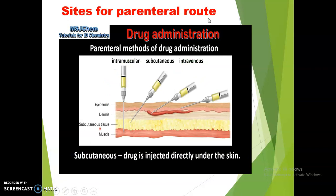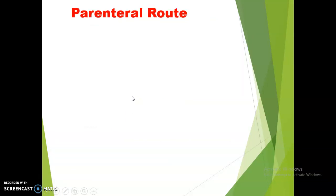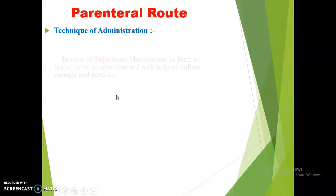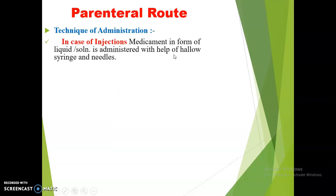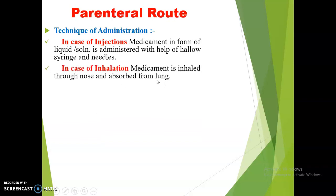Here a diagram indicates the sites of parenteral routes — intramuscular, subcutaneous, intravenous, and intradermal. Now let us discuss each parenteral route in detail. There are two techniques of administration: injection and inhalation. In the case of injection, the medicament in the form of a liquid or solution is administered with the help of a syringe and needle, whereas in inhalation, the medicament is inhaled through the nose and absorbed from the lungs.